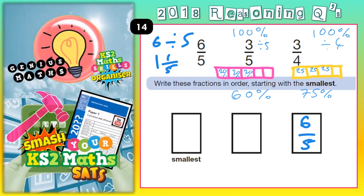And then we can use this working out about percentages to figure out which one of the other two is the smallest. Well, 60% is smaller than 75%, so 3 fifths must be smaller than 3 quarters. So 3 fifths must be the smallest, and 3 quarters must go in the middle box.